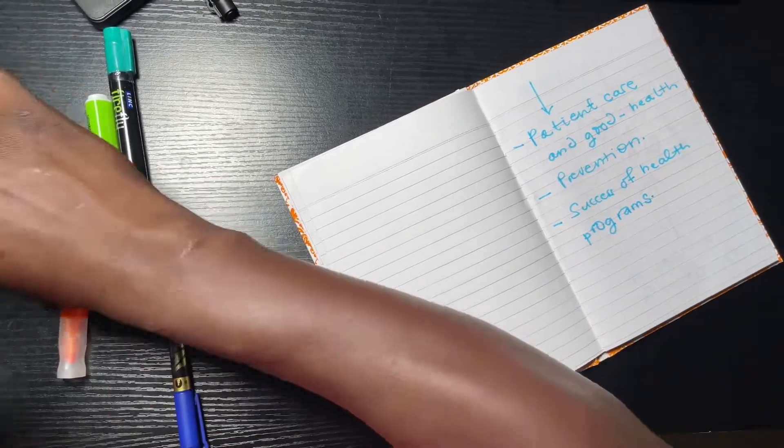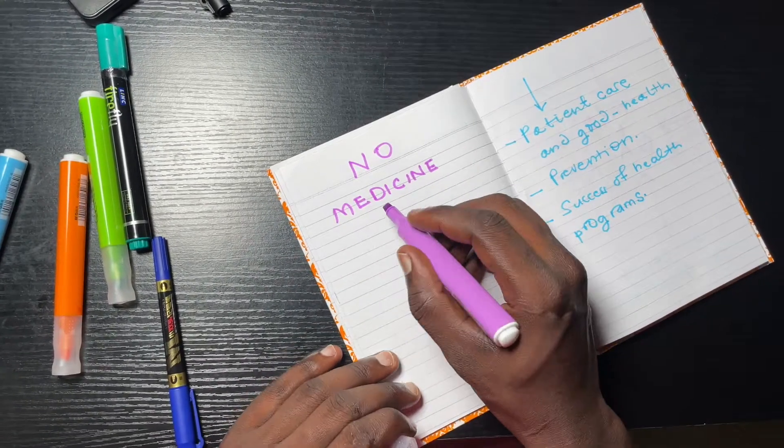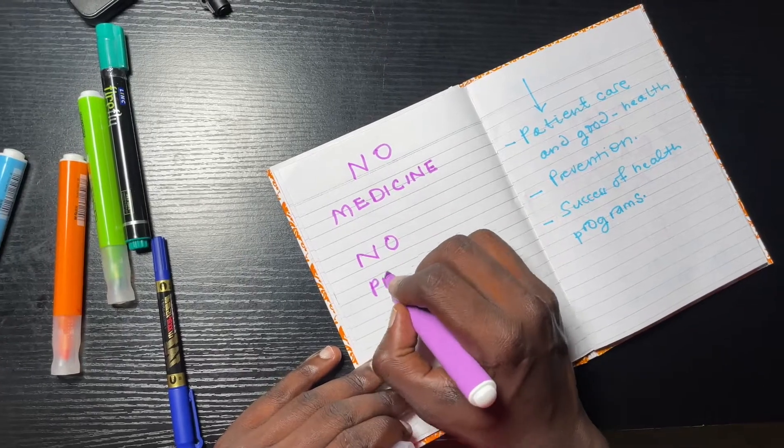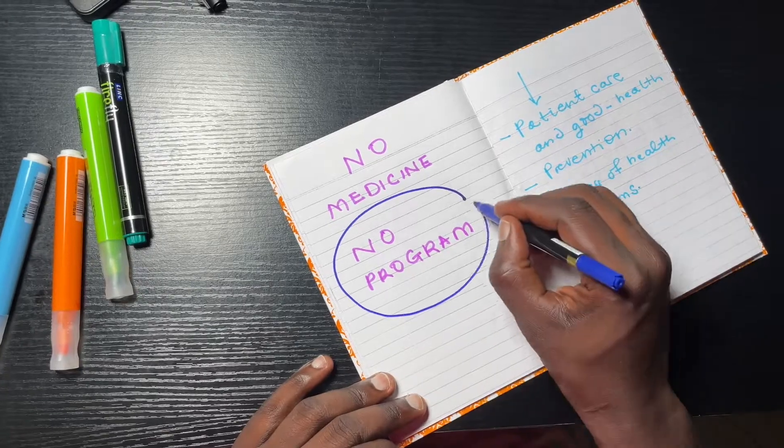Good logistics management should culminate in the availability of adequate quantities of medicines. If the cycle is not implemented rightly, there will be no medicines and ultimately the programs will not succeed.